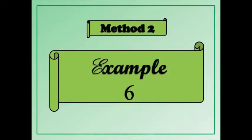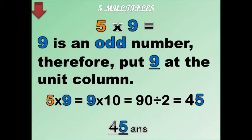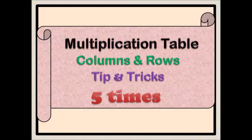Example six: five times nine. Nine times ten equals ninety. Ninety divided by two is forty-five. If it's an odd number, you put five at the end; if it's even, zero.